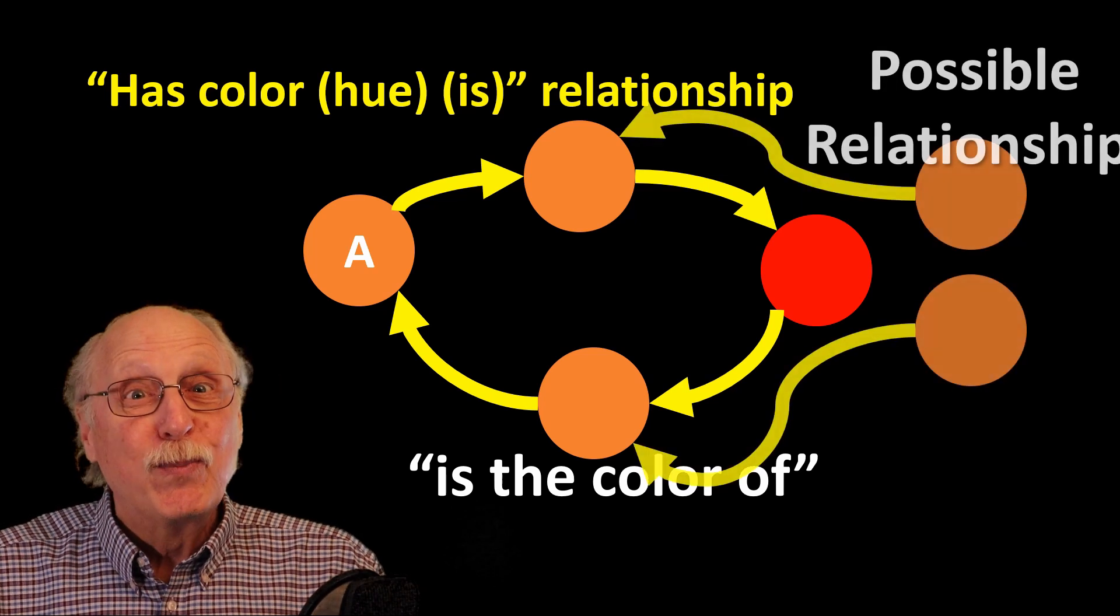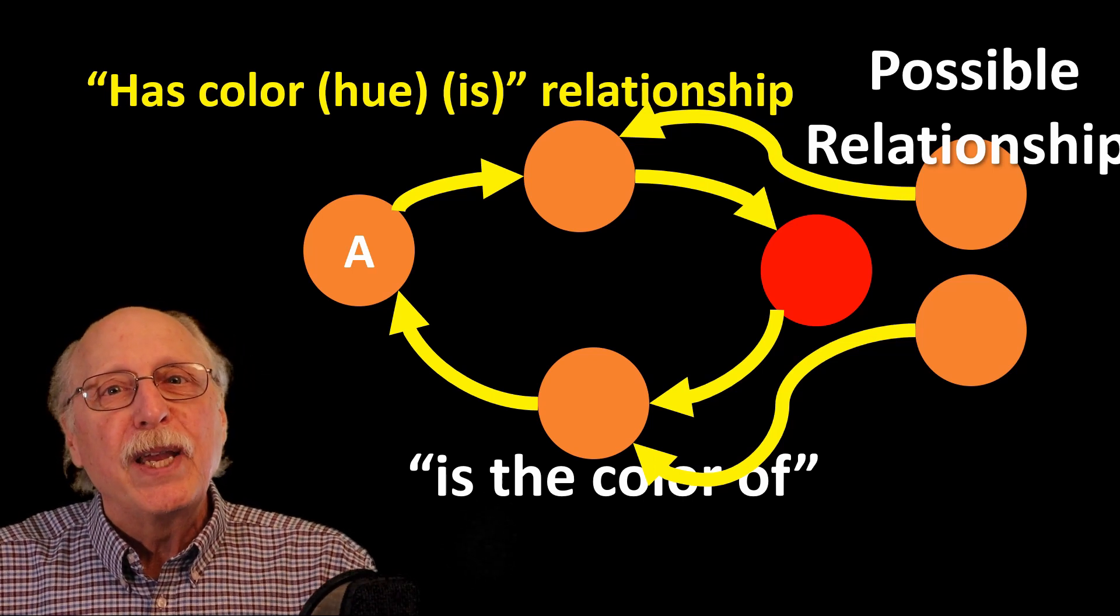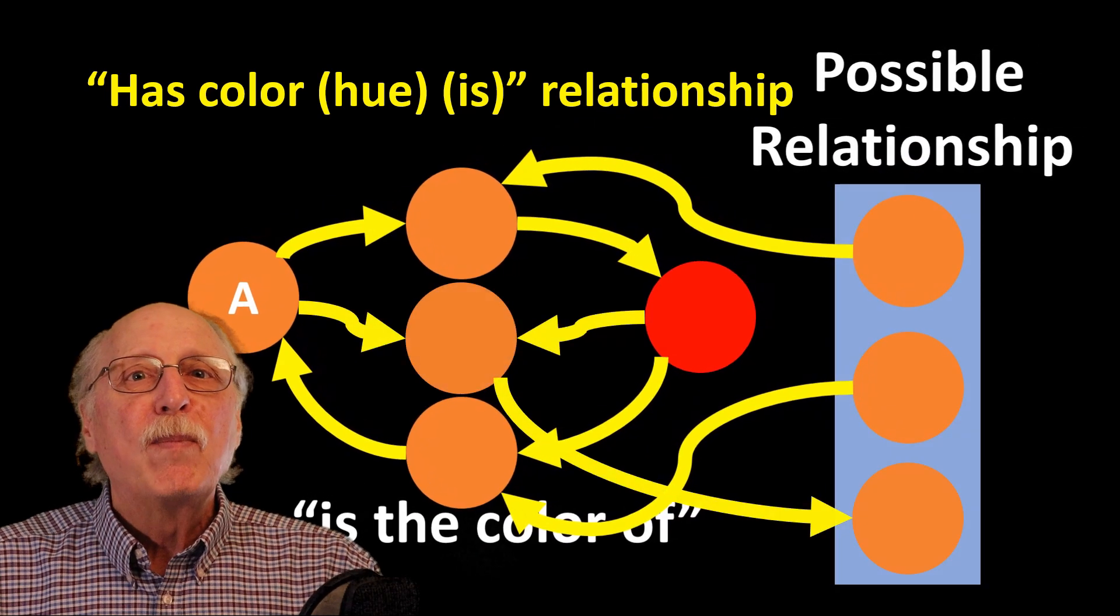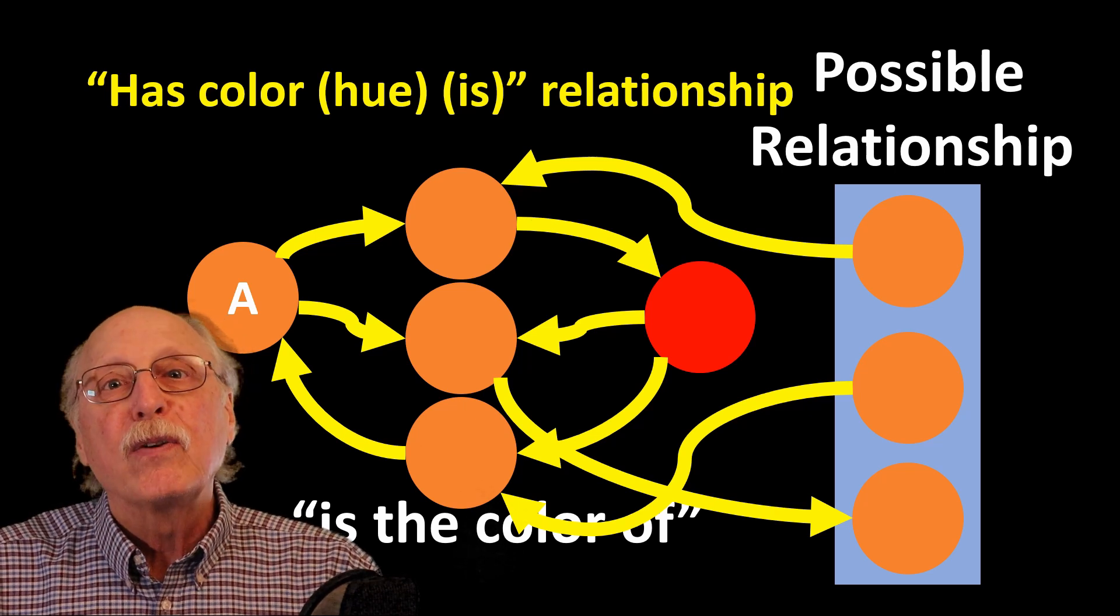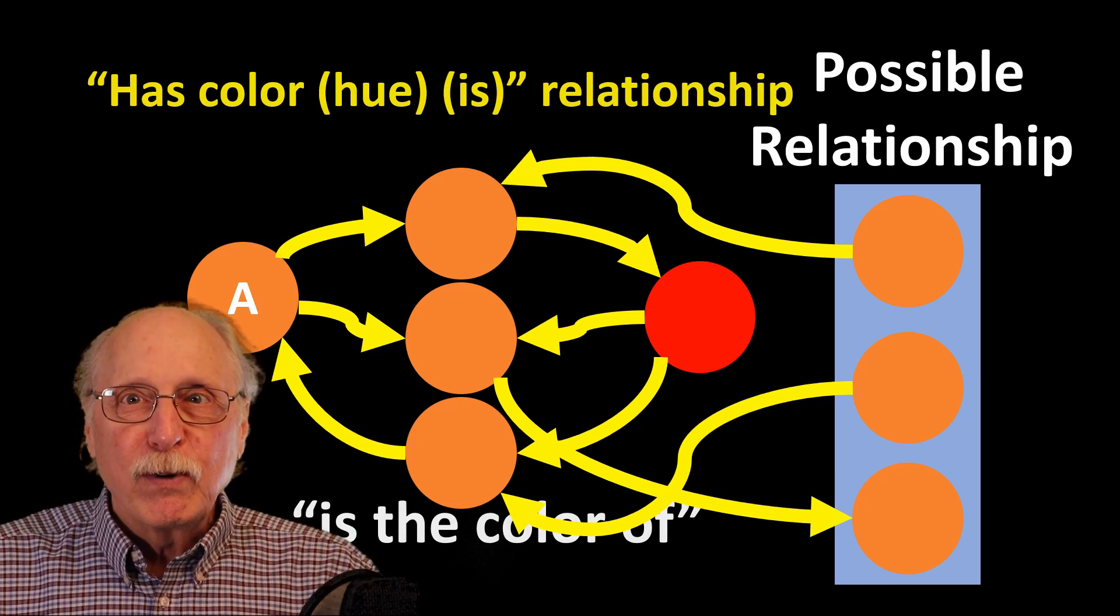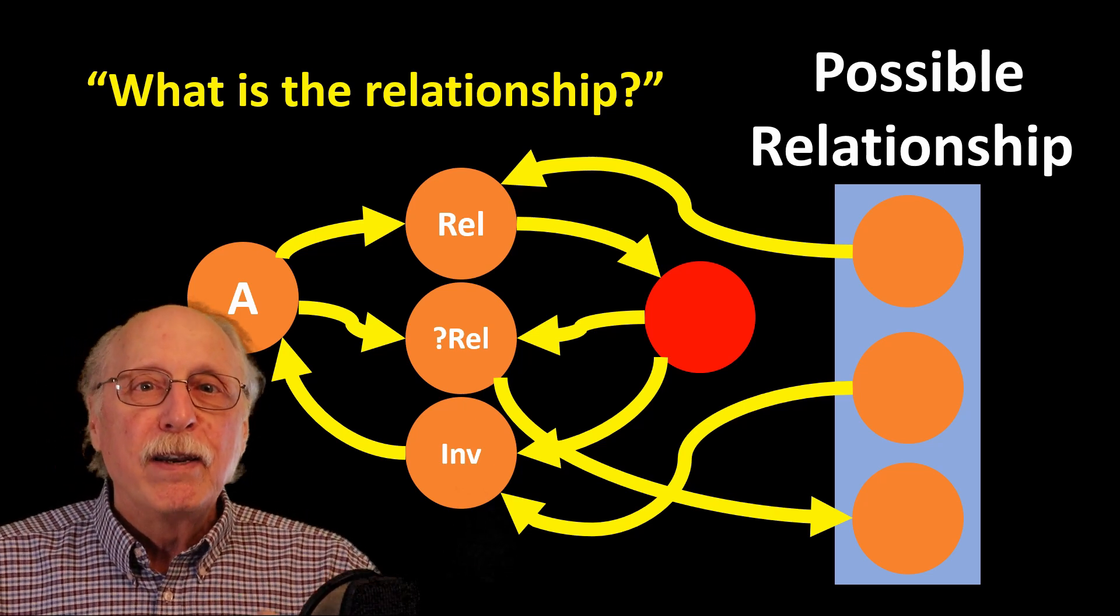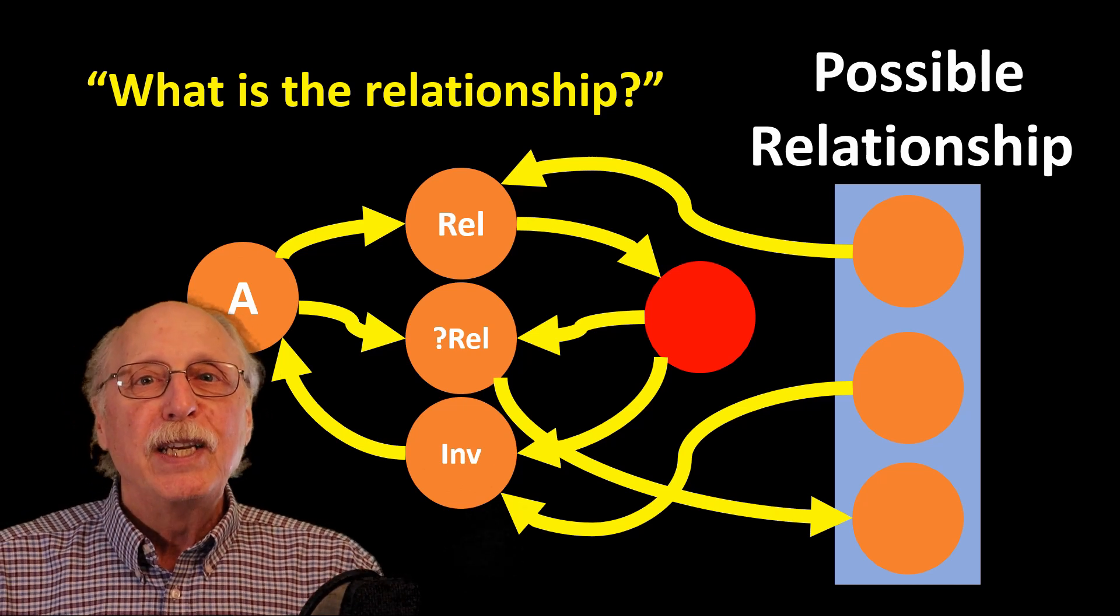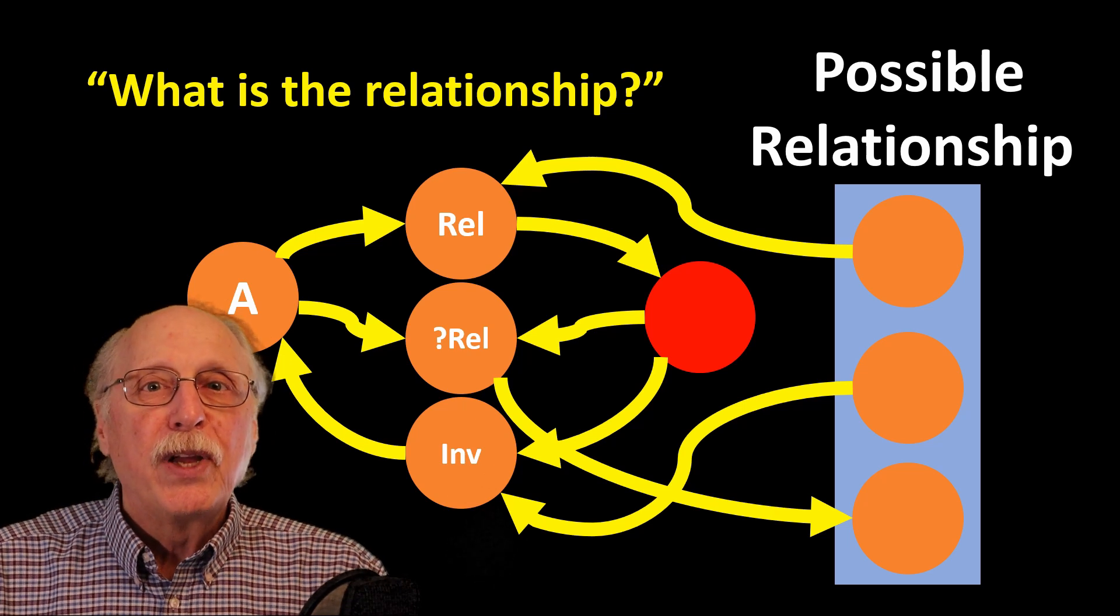But wait, there's more. If you're given two nodes or objects, you want to be able to know what the relationships are between them. In a moment, I'll use this third relationship to ask what's the relationship between A and B and learn that A is lighter, or bigger, or something else. So every relationship is represented by three neurons: the relationship going forward, the inverse, and the query which will allow you to know what the relationship is between any two objects. All this complexity is embedded in a single knowledge graph edge.